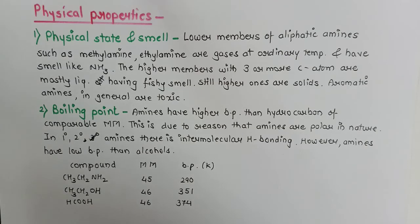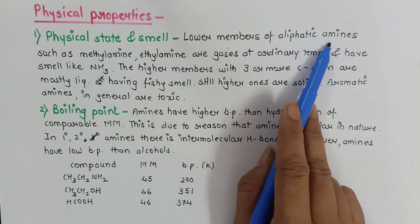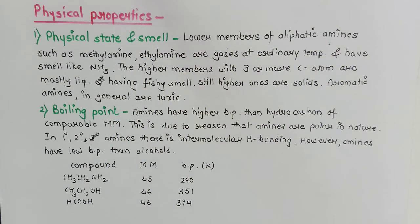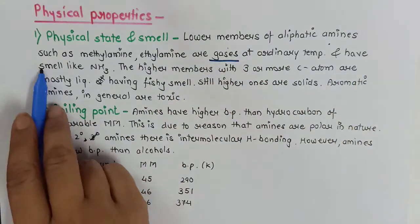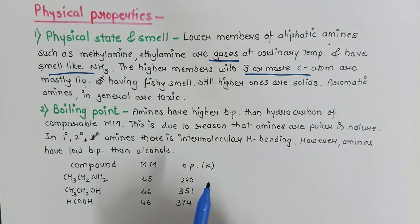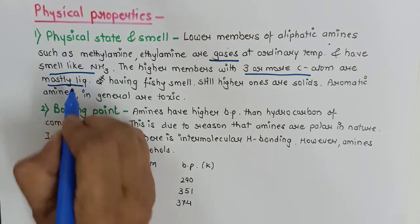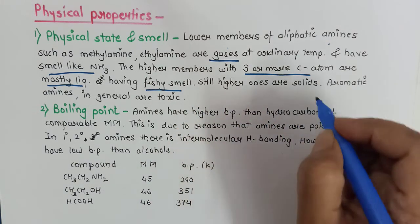Now let us study physical properties. The first is physical state and smell. Lower aliphatic amines containing 2 or 3 carbon atoms — such as methylamine and ethylamine — are gases with a smell like ammonia. Higher amines with 3 or more carbon atoms, like propanamine, are mostly liquids with a very fishy smell. Still higher amines are solids. Aromatic amines are toxic in nature.